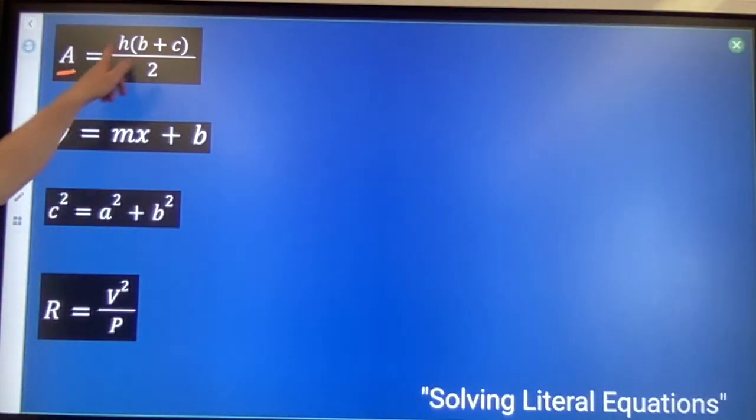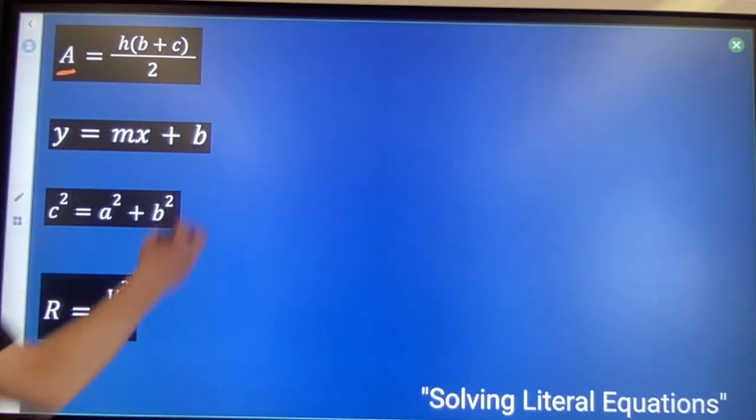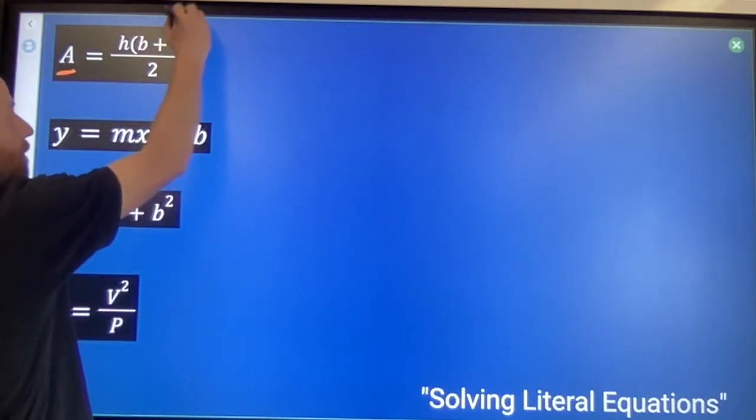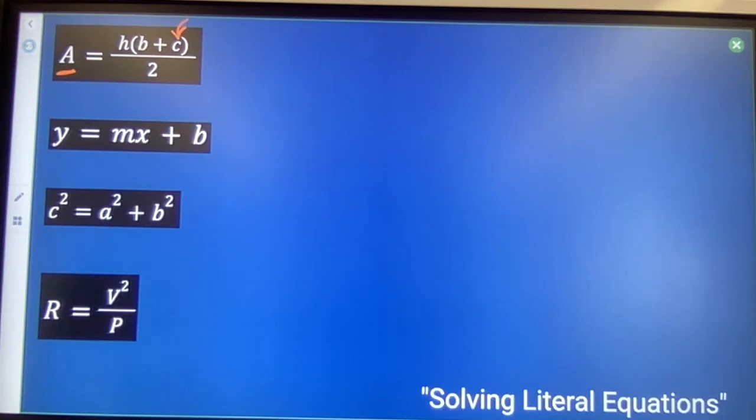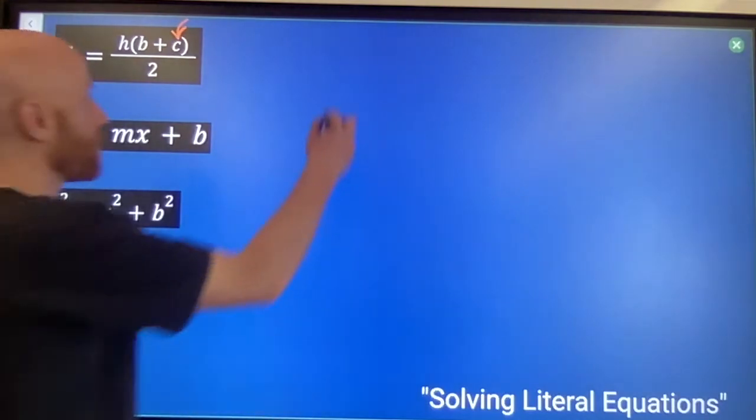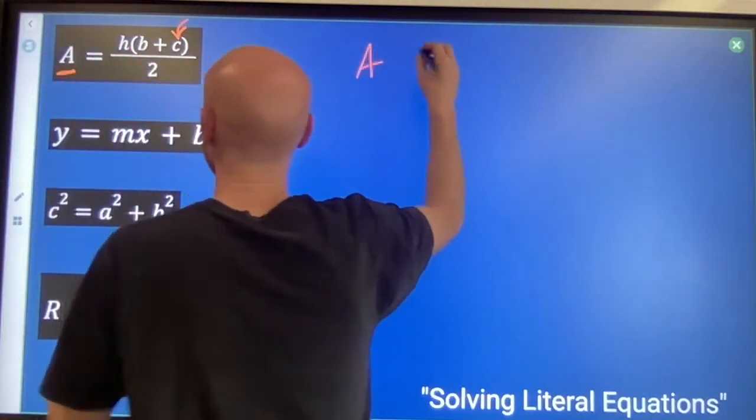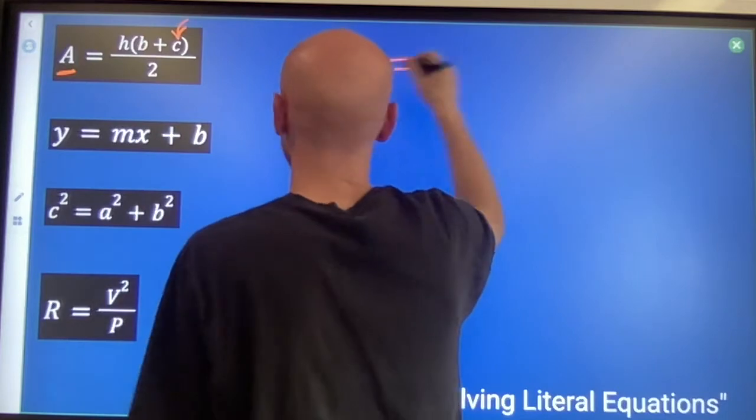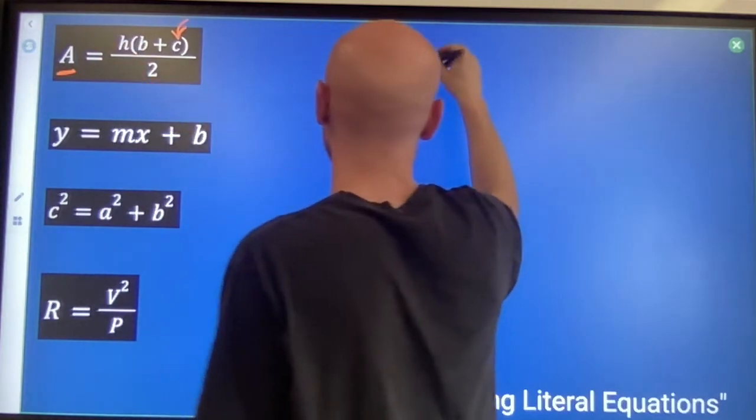For example, in this equation here, I could say solve for letter C, and that just means work this using opposite operations, using distribution if you need to, work this until that letter C is by itself. I would do the same kind of stuff I would do if all these other letters were numbers instead.